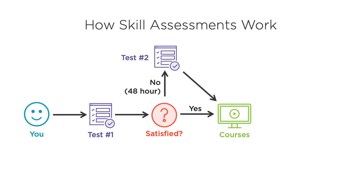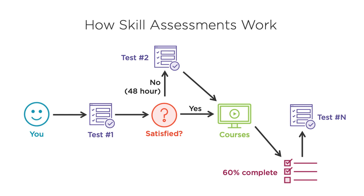If you aren't satisfied, you get a free do-over within 48 hours — basically a free second test — and the highest score is retained on record. After the second test, it's time to start your training. If you want to take the assessment again, you must do one of two things: complete 60% of the entire learning path by watching the videos — roughly two out of three courses for the DevNet Associate — then retake the test. Alternatively, you can wait 30 days, which resets the clock. The benefit of getting through 60% of the learning path is that you get unlimited retakes without needing to wait.